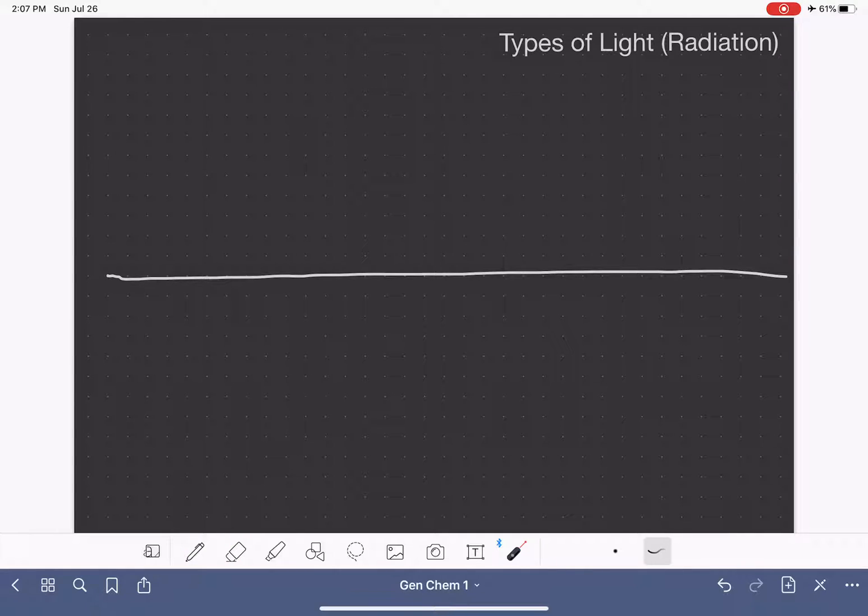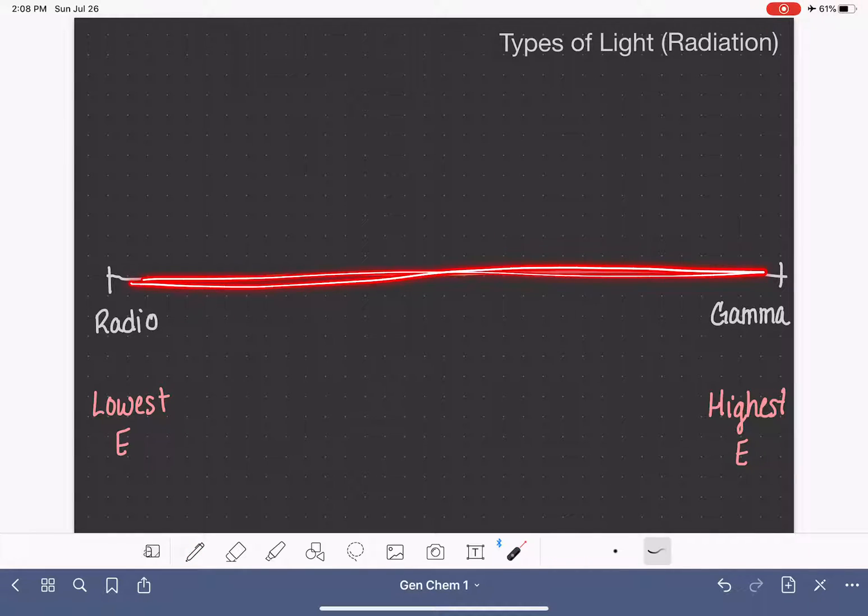And I'm not trying to indicate anything with the distances that I put between these objects. Over here on this side, I'm going to put radio. Radio energy is one of the extremes of the different types of light. And on the other end, I'm going to put gamma. That's our other extreme. This sometimes is referred to as gamma ray. Radio is literally like radio that you would have in your car. Radio energy is very low energy. It is the lowest energy. And gamma is the highest energy.